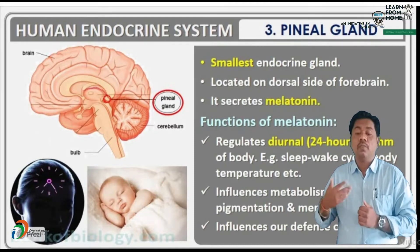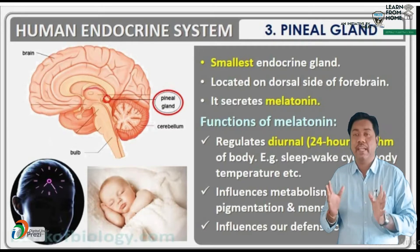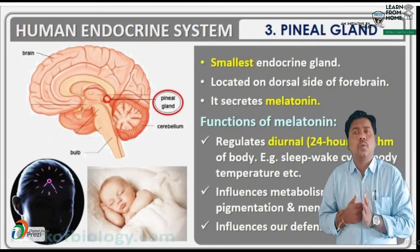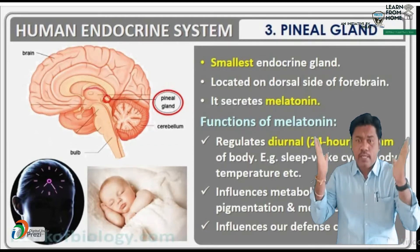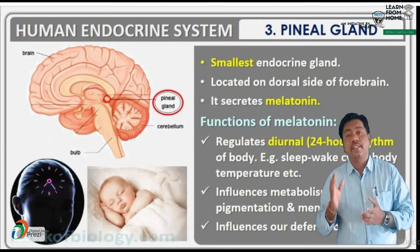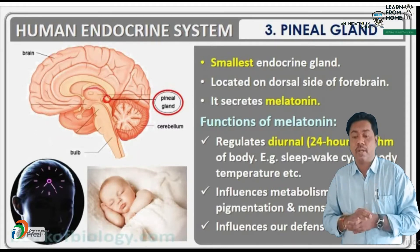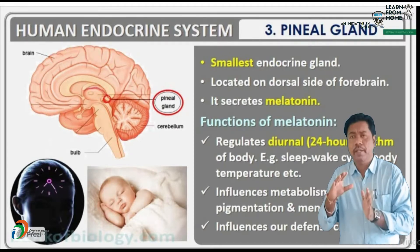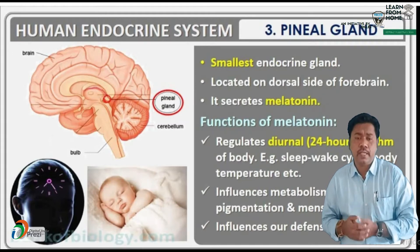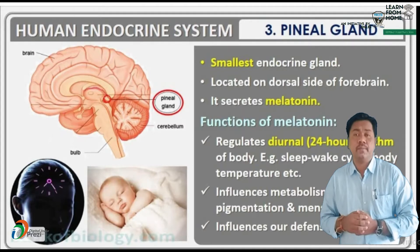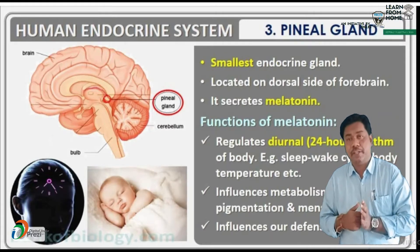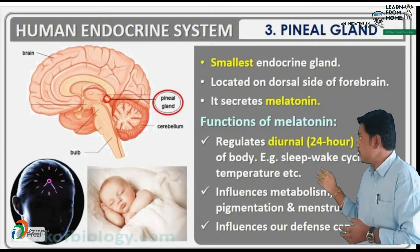Melatonin plays a very important role in the regulation of the 24-hour rhythm of the body. It helps in maintaining the normal sleep-wake cycle. It also influences body temperature — our temperature is regulated by melatonin hormone. Additionally, melatonin influences metabolism and affects pigmentation.